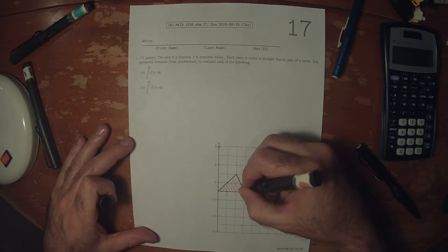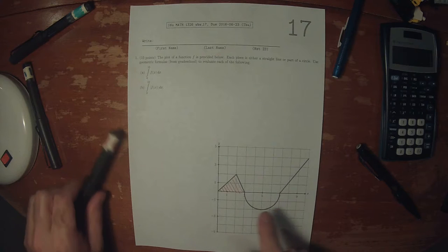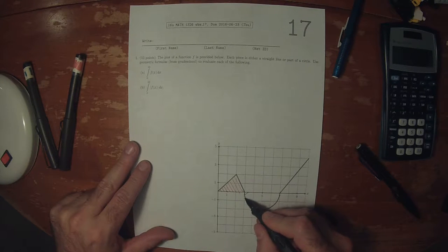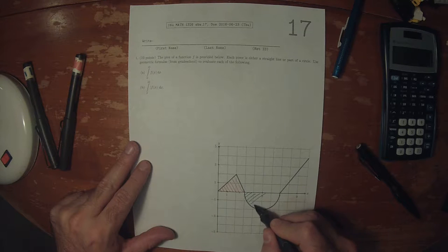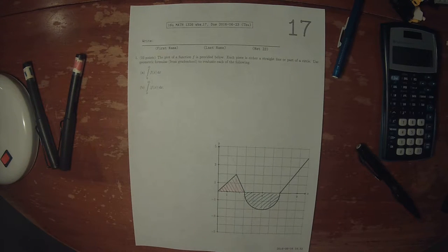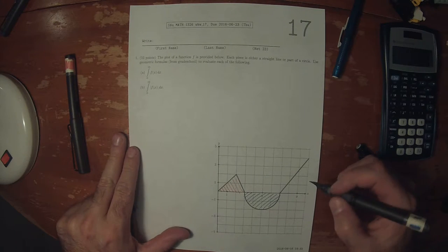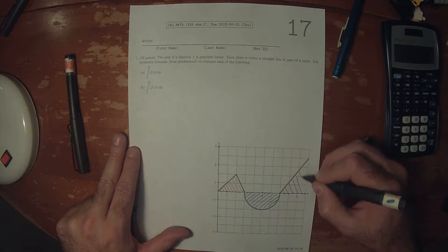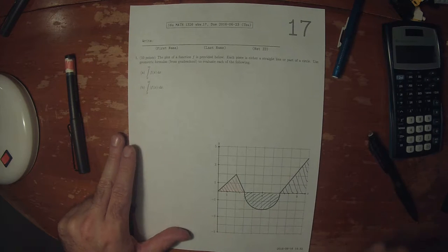This red area, a piece of a triangle. This green area, half of a circle, and this blue area, a triangle.